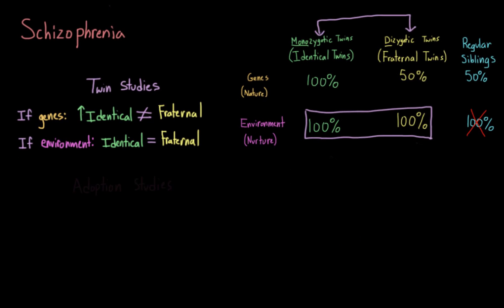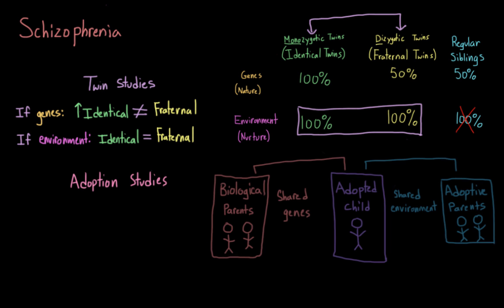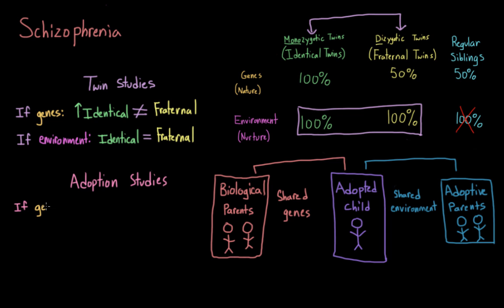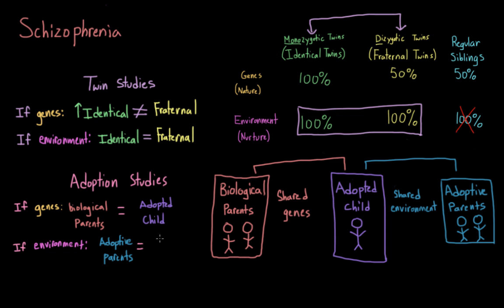Another type of study that helps tease apart nature and nurture is adoption studies. In these studies, individuals who have been adopted are compared to their adopted families and their biological families. Sticking with the schizophrenia example: if rates of schizophrenia in adopted individuals resemble rates in their biological family but not their adopted one, we conclude there's a strong genetic component. But if adopted children resemble their adopted parents rather than biological ones, we conclude environment plays an important role. Because adopted individuals are exposed to different environments from their biological relatives, it's easier to separate genetic and environmental effects.